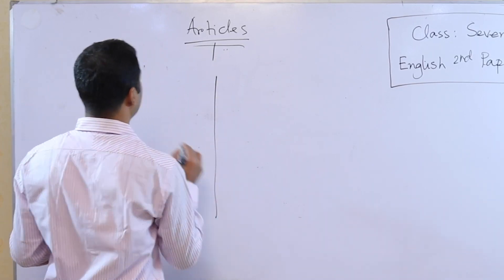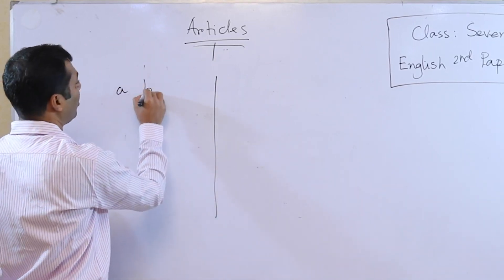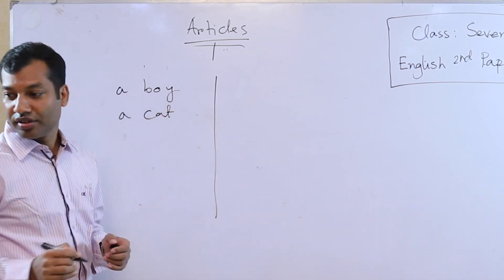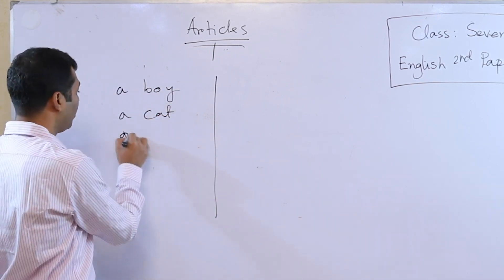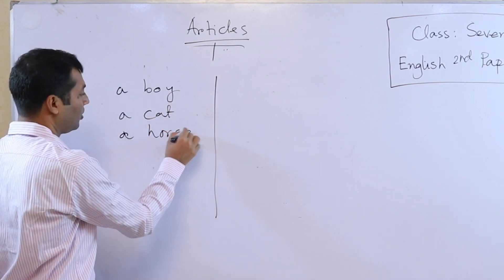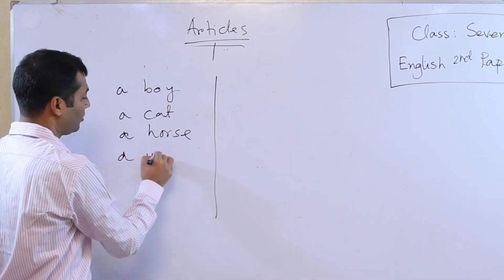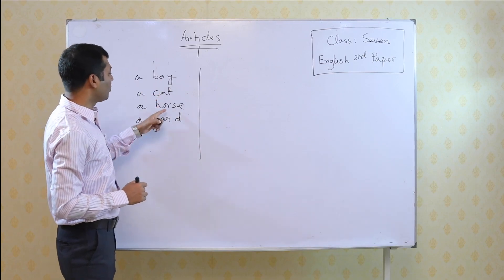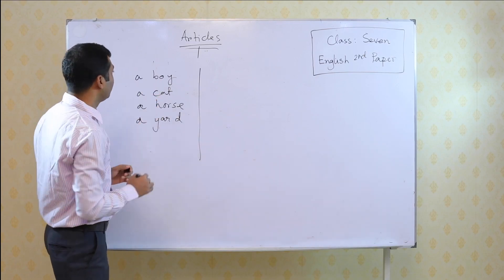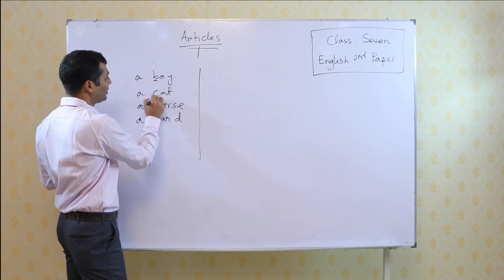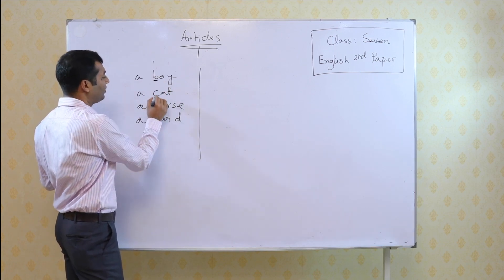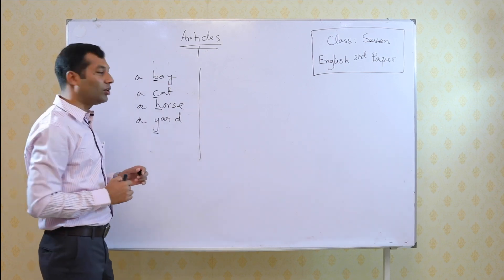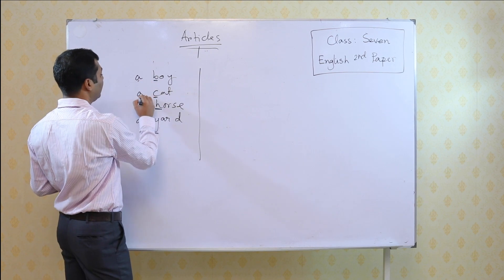For example: a boy, a cat, a horse, a yard. Look at these words — boy, cat, horse, and yard — every initial sound is a consonant: b, c, h, y. These are consonant sounds. Only for this we have used the article 'a'.